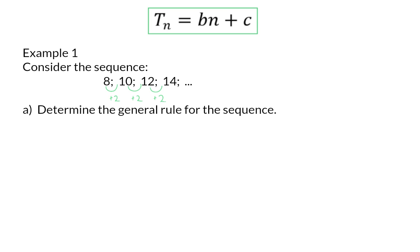This means that there is a constant difference, which means it is a linear number pattern. Because we keep on adding 2 every time, we are going to add 2 a specific number of times. And that is why we always start the general formula with 2 times n.